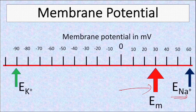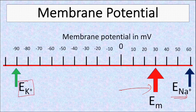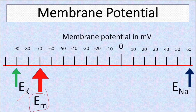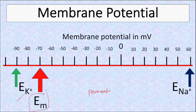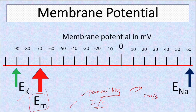In a typical neuron, the permeability of potassium is higher, so the membrane potential is close to the potassium equilibrium potential. Even if there are more ions, if we know the value of their permeability and the intracellular and extracellular concentrations, we can calculate the membrane potential of the cell.